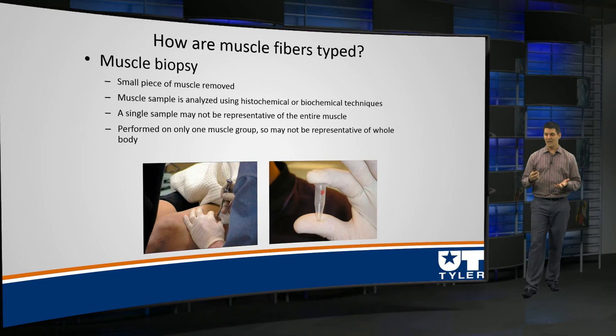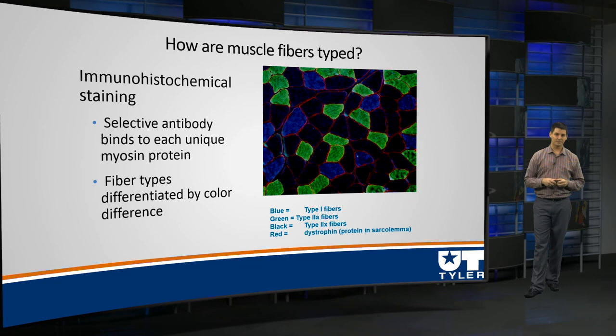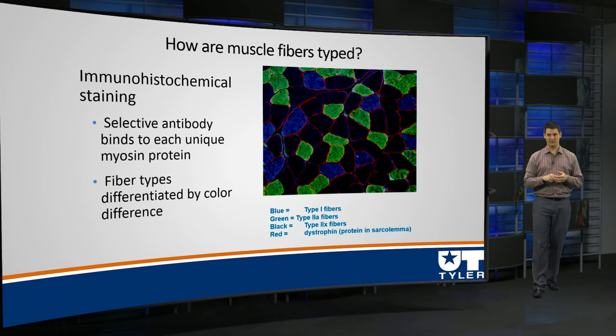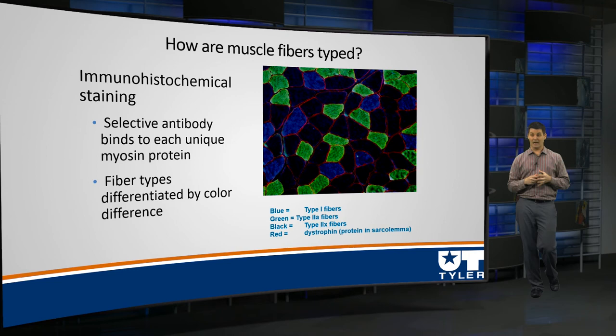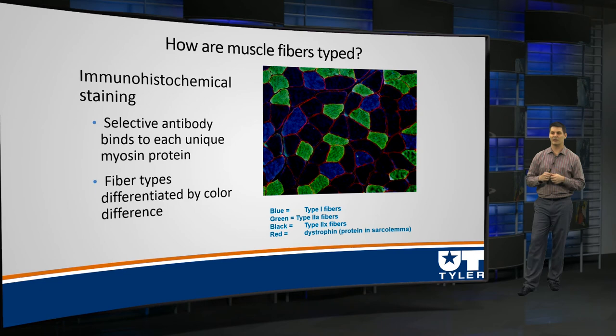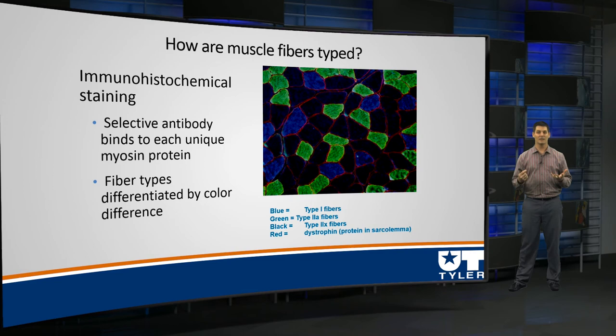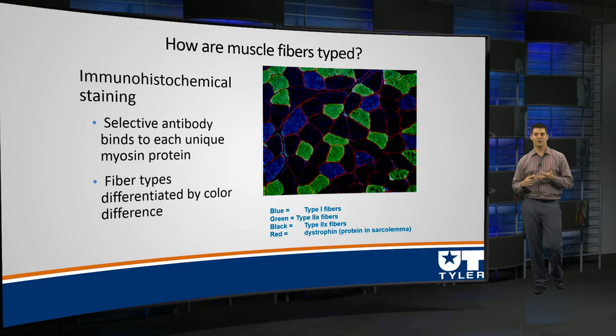Now that we have our muscle sample, how do we actually fiber type them? The easiest way is immunohistochemical staining. In this case, we have an antibody that binds to each unique myosin ATPase, and we can look at them under a fluorescent microscope and get pretty pictures. This image was actually generated from my lab when I was a postdoc at the University of Florida. We can see three different colors: blue, green, and black. In this example, blue is our type 1 fibers, green is our 2A, and black fibers are our 2B or 2X fibers.